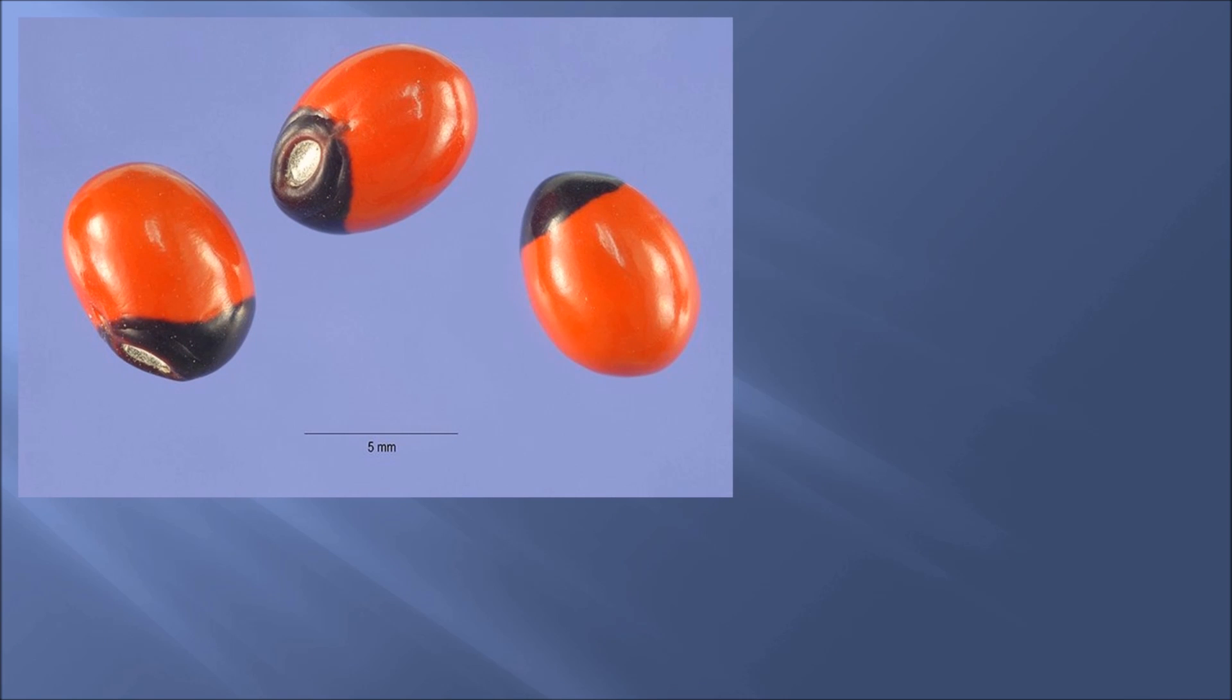Here are some seeds that clearly show the location of the embryo. It is the white scar inside the black area. The scar is the point where the seed was attached to the mother plant. To scarify these seeds, stay away from the scar.